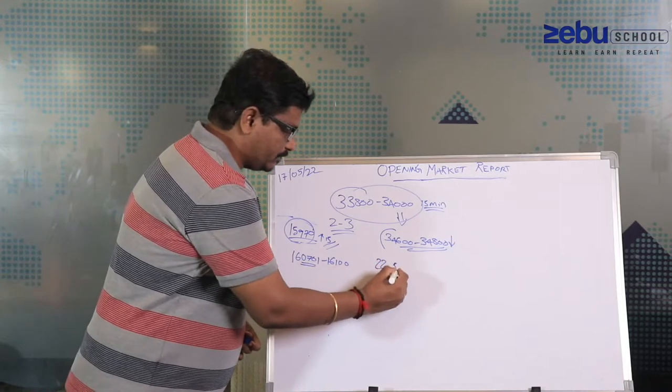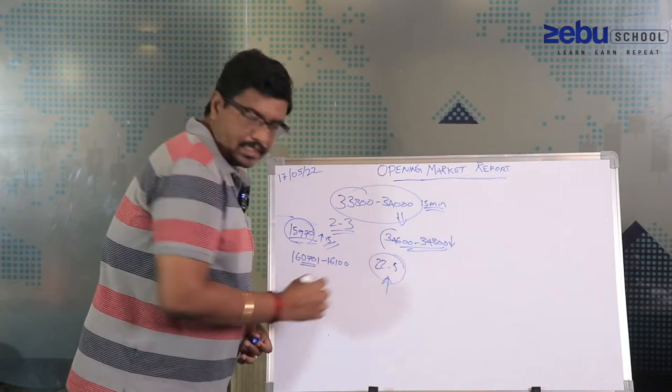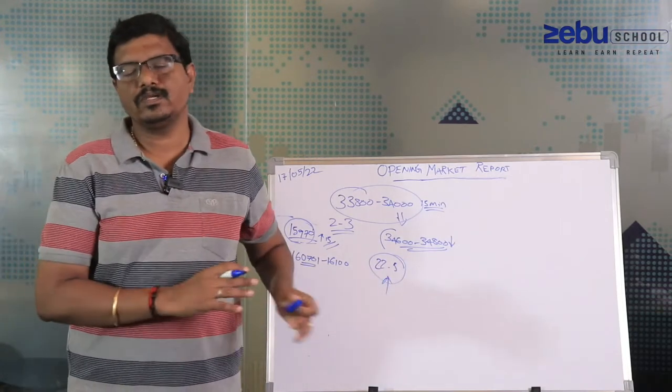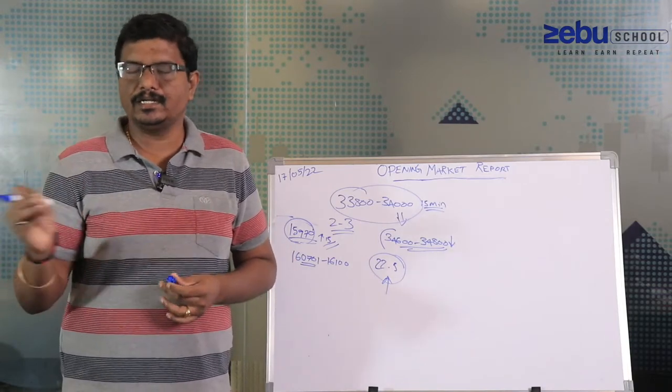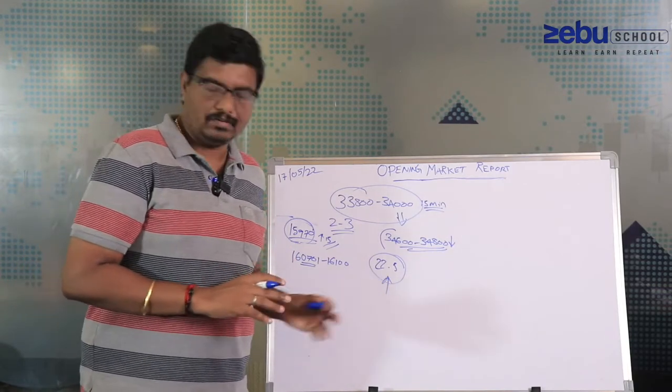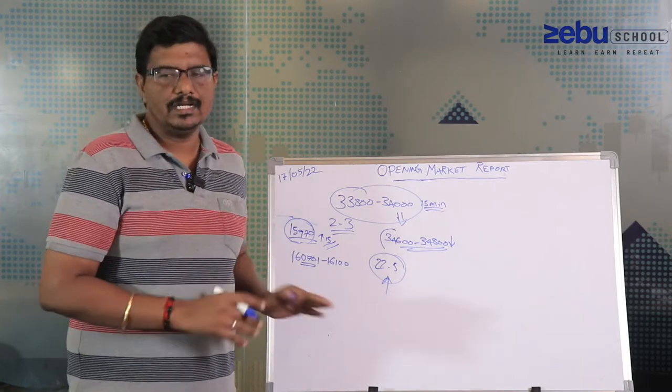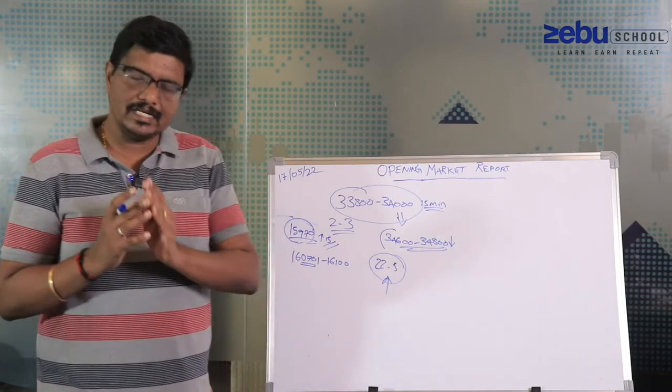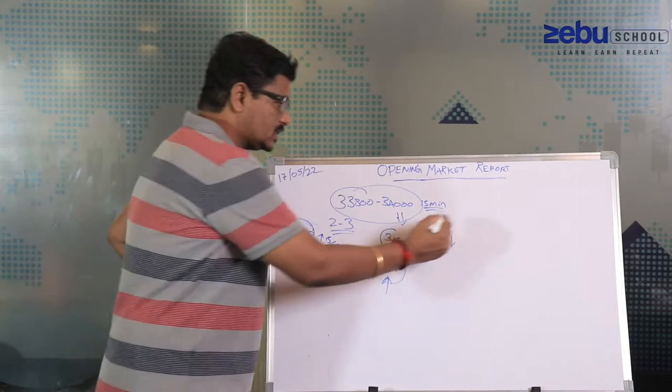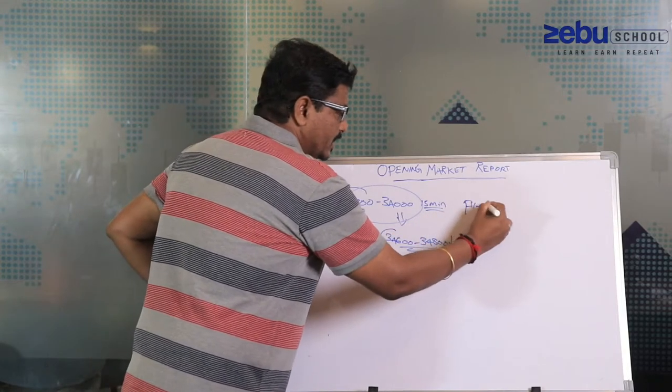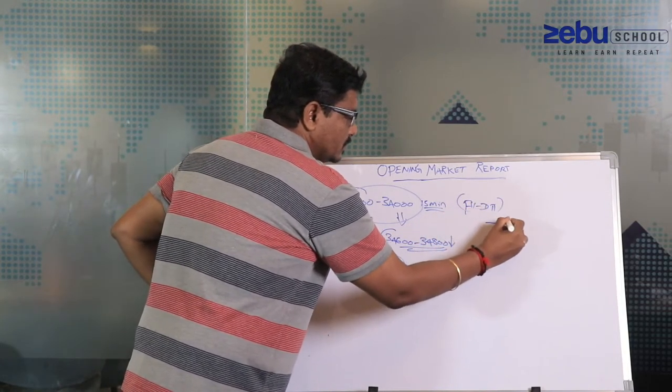India VIX is around 22.5 - this is still a key level. It's above 20, so people trading in the Indian market without any strategy need to be a little careful.